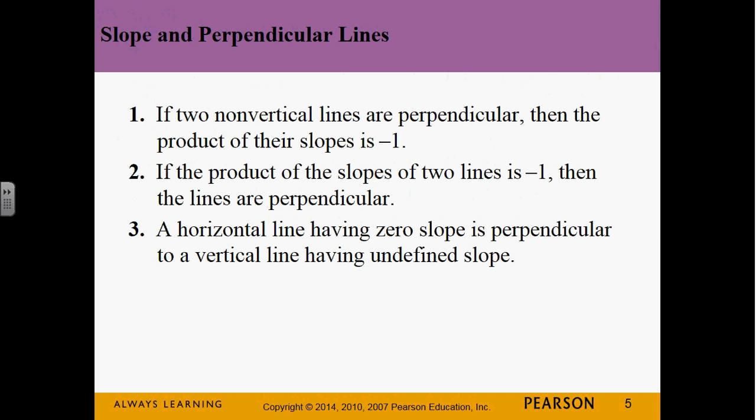Perpendicular lines, if two lines are non-vertical and they're perpendicular, what's perpendicular mean? Yeah, or they intersect at a right angle. So if they are perpendicular, then the product of their slopes is going to be negative 1. If the product of two lines' slopes is negative 1, then those lines are perpendicular. It goes the other way. The other one is if a line is horizontal, it will automatically be perpendicular to a vertical line. So remember, vertical has no slope, so we can't use condition 1 and 2 for those.